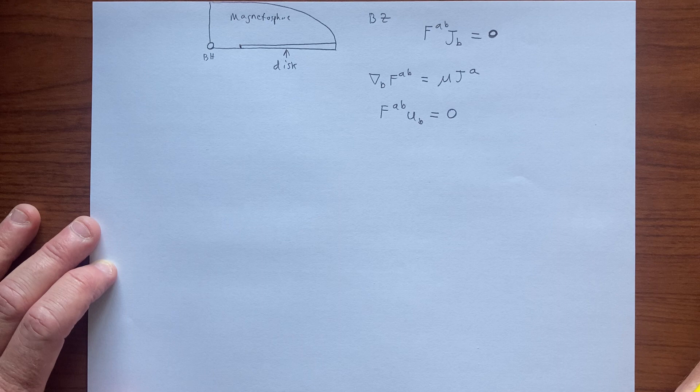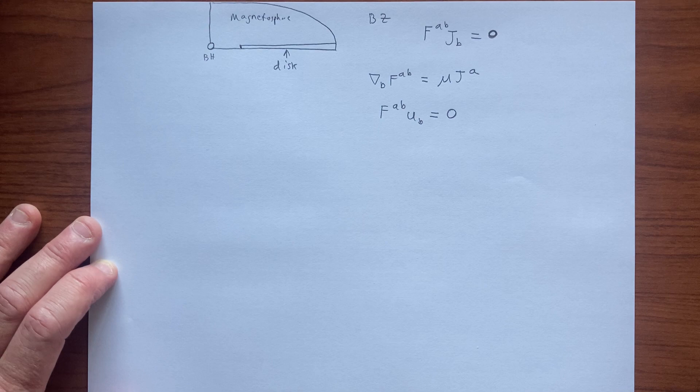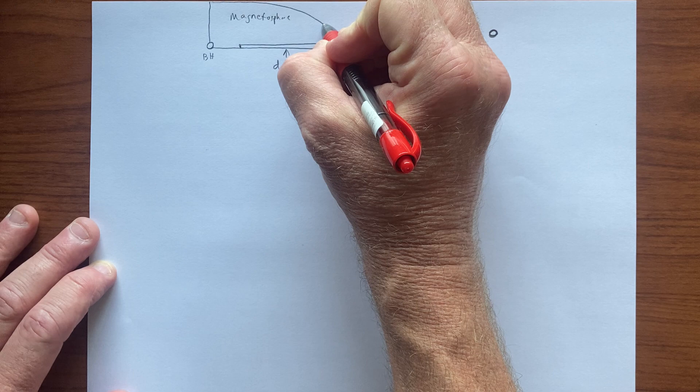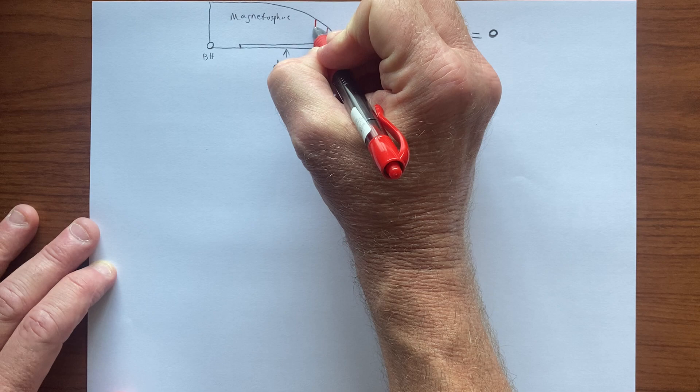So basically, you have a magnetic field - I'm going to make it with a different color, a red magnetic field. You impose some boundary conditions, and you have a magnetic field that's threading the disk and starts to be dragged inward.